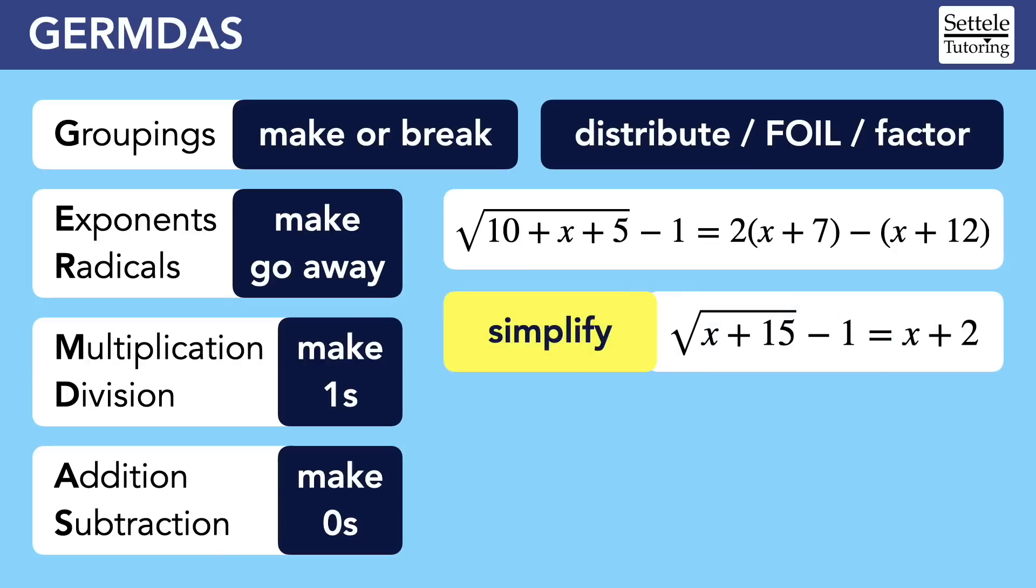First, we'd simplify each side of the equation separately, moving through GERMDAS forward from left to right. At a certain point, each side of the equation will be stuck, where we can't combine any more terms. On the left, we can't combine the 15 and negative 1 because the 15 is stuck in a grouping under the radical. On the right, the x and the 2 are different kinds of terms.